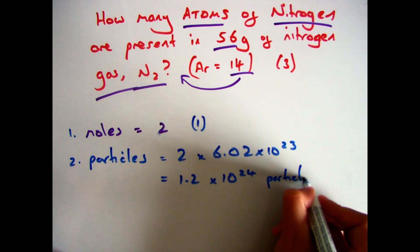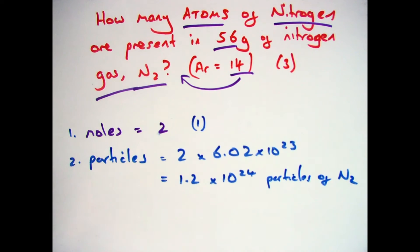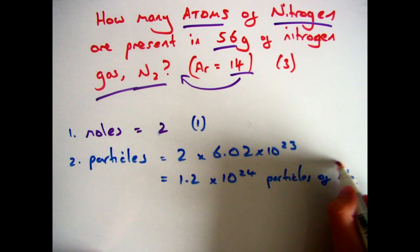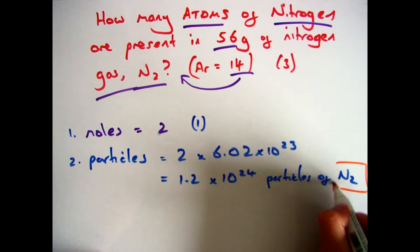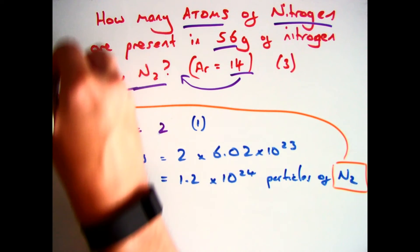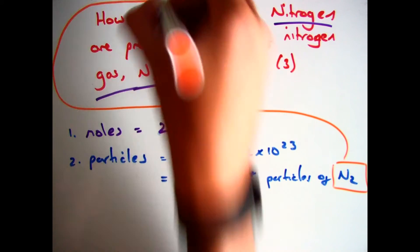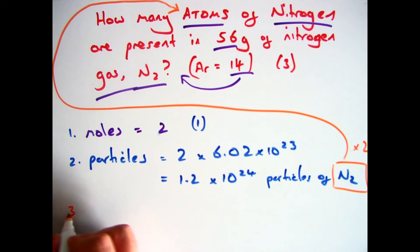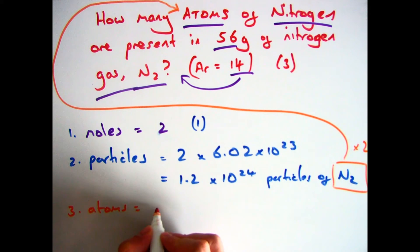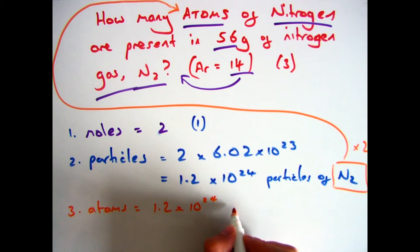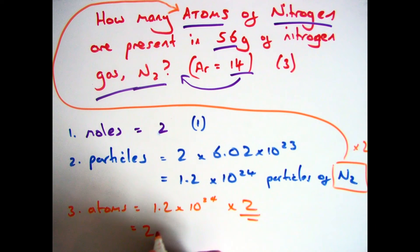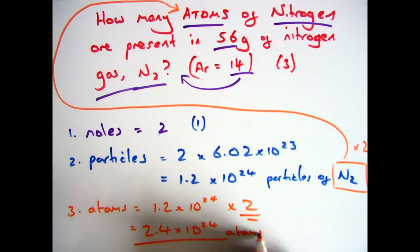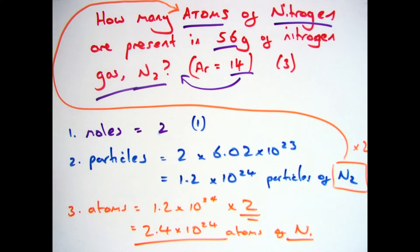But don't stop there. We have 1.2 × 10²⁴ particles of N₂, but the question asks for atoms of nitrogen. There are 2 atoms of nitrogen in every nitrogen molecule, so to work out the atoms you must multiply by 2. So 1.2 × 10²⁴ times 2 gives the answer of 2.4 × 10²⁴ atoms of nitrogen.